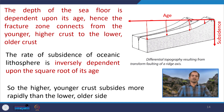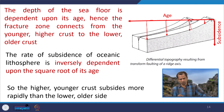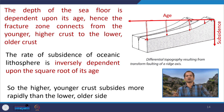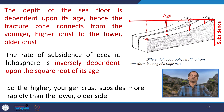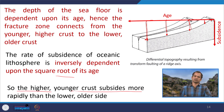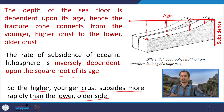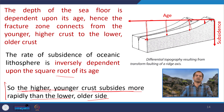Fracture zones connect younger higher crust to lower older crust. Older crust is at a lower topographic level and younger crust is at a higher topographic level. The rate of subsidence of oceanic lithosphere is inversely dependent upon the square root of its age — so the younger, higher crust subsides more rapidly than the older crust.